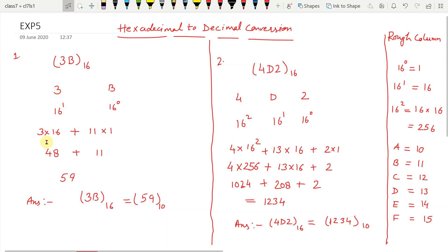Here is the multiplication of hexadecimal number and its positional value. 3 times 16 plus 11 times 1, where the value of B is 11.